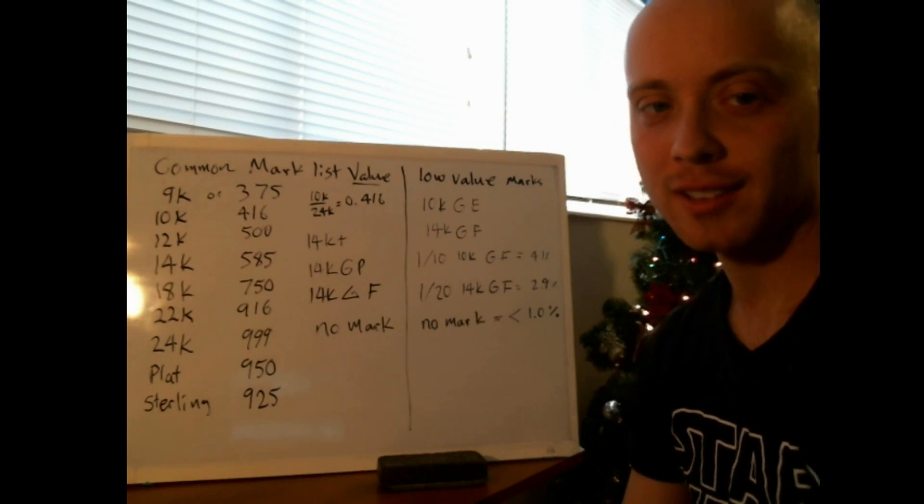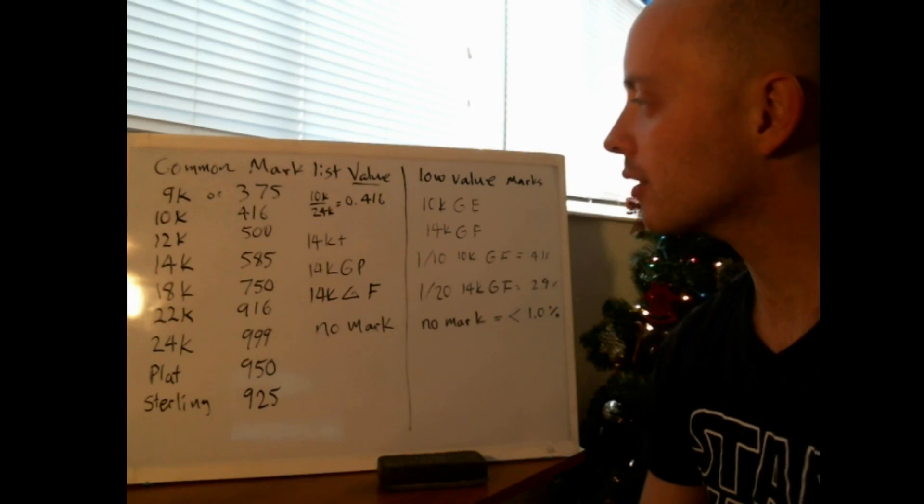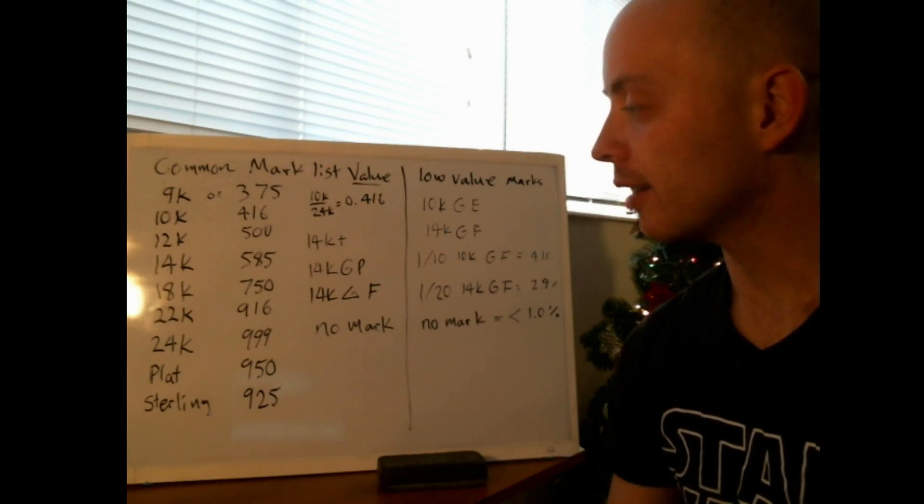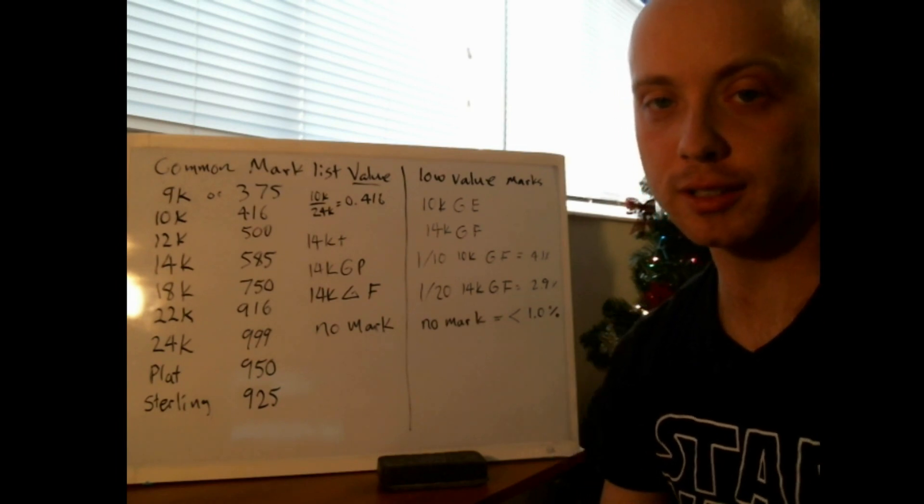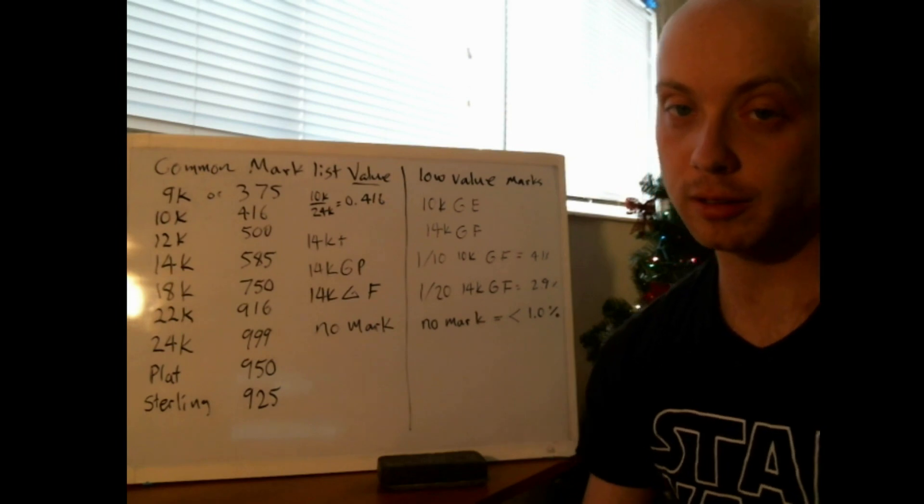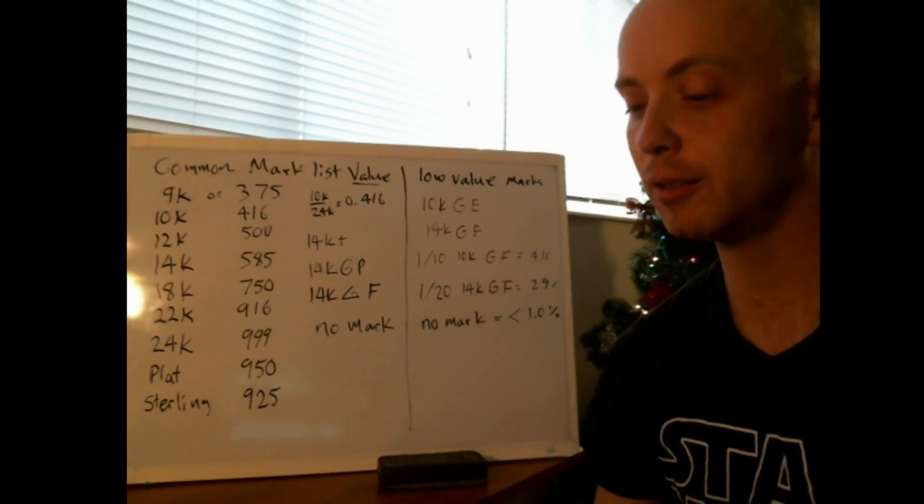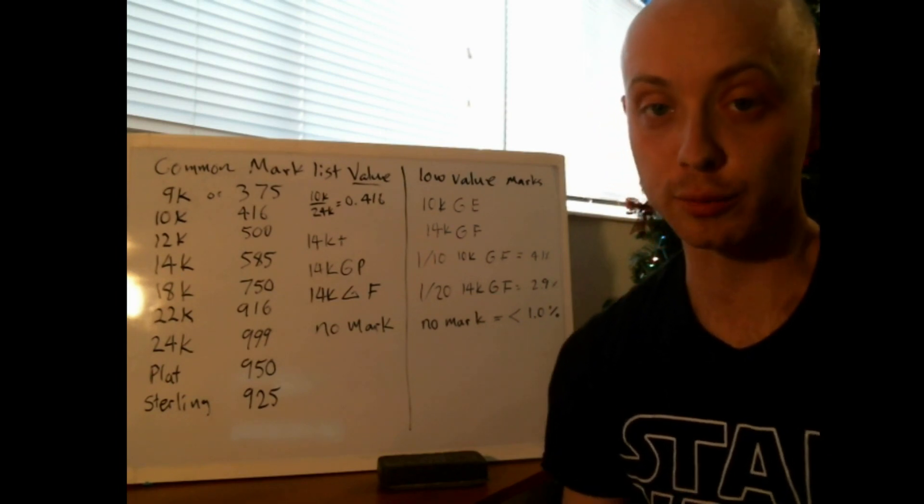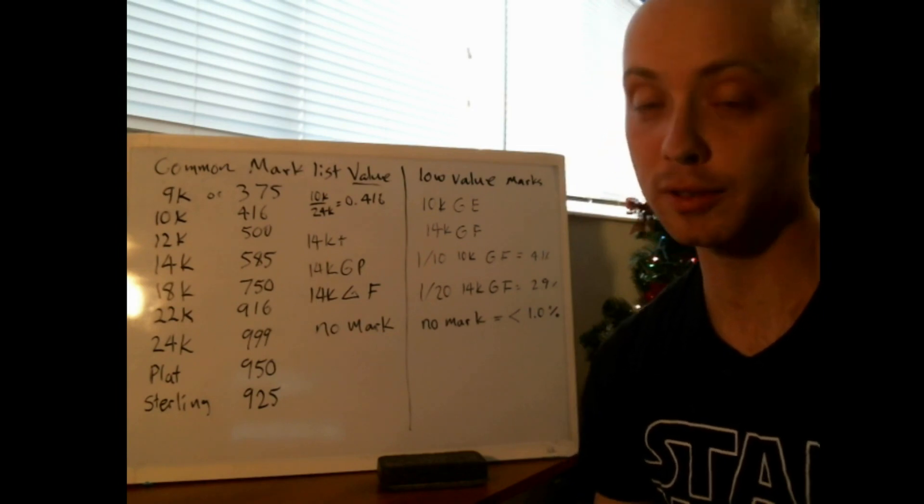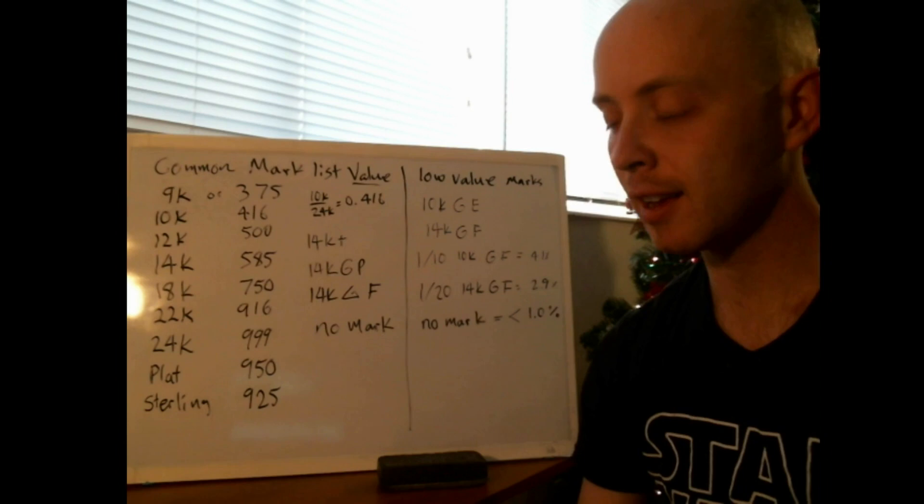Hello everybody, today we're doing a video about common marks on jewelry, coins, and bars. This is a very important topic because as a gold buyer, and even as a consumer buying gold, you want to know if what you're buying is real and you don't want to be swindled by fake jewelry, fake coins, and stuff.